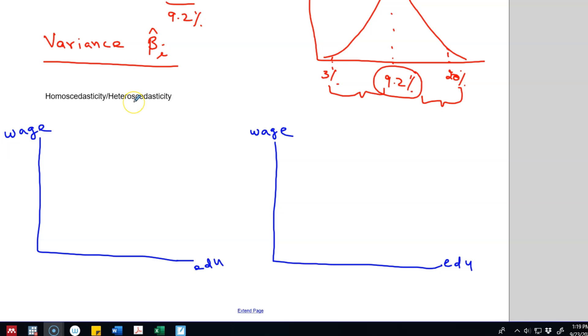In this video, I'm going to talk about homoscedasticity and heteroscedasticity. We want our model to be homoscedastic, so by homoscedasticity I mean that the variance of the error term ui given education of an i-th person is a constant number. That is, if we draw a graph of all the people in the data.